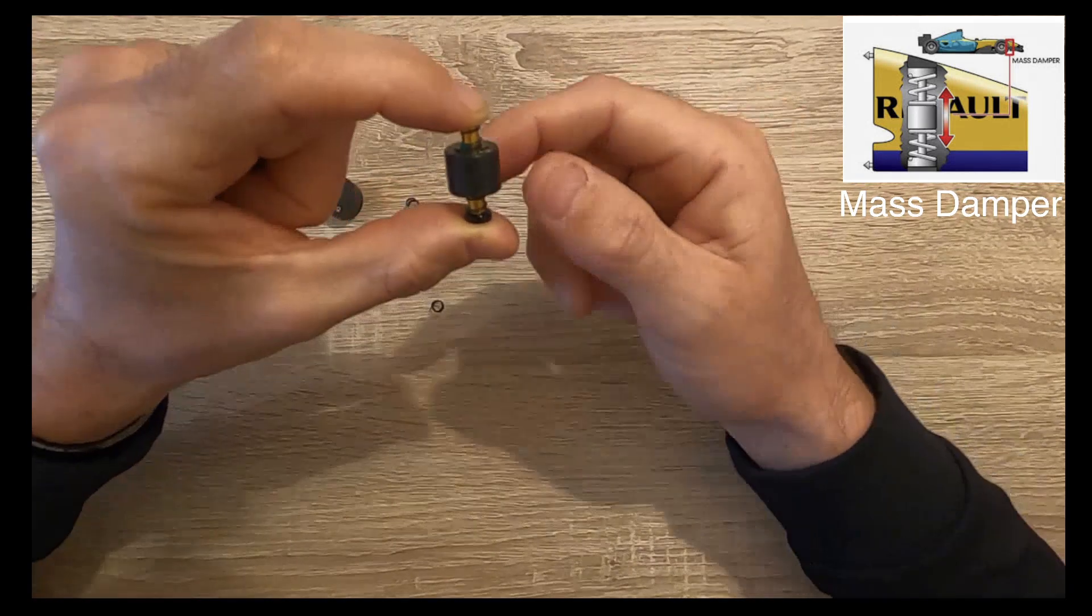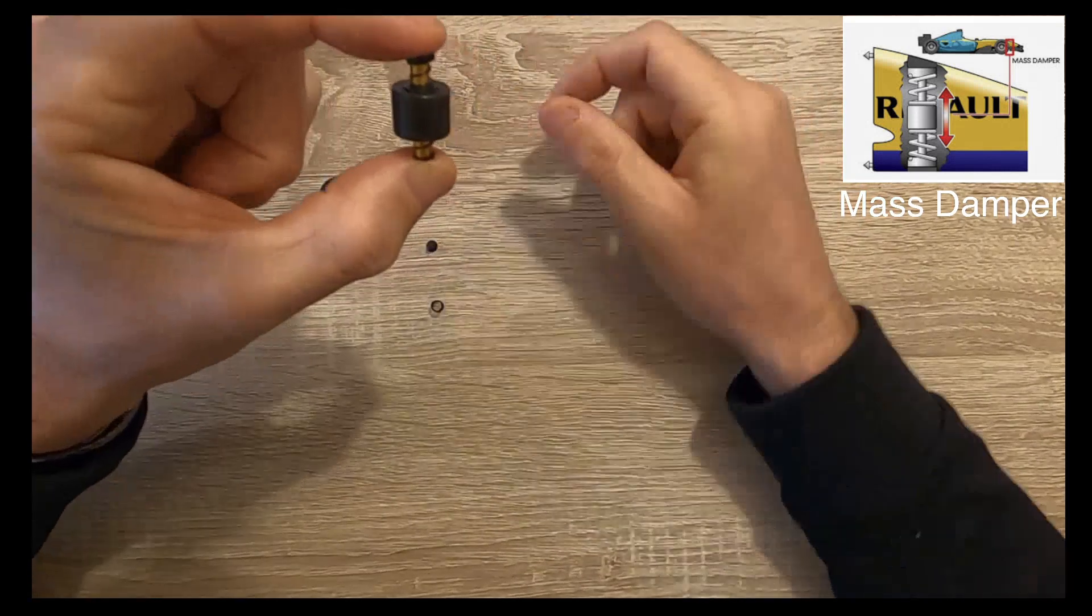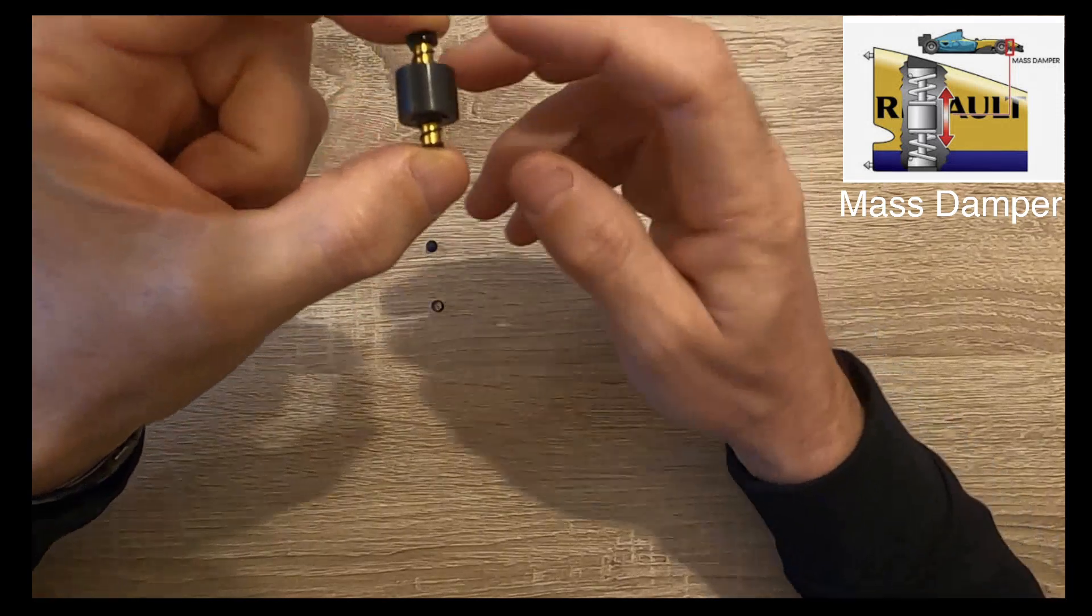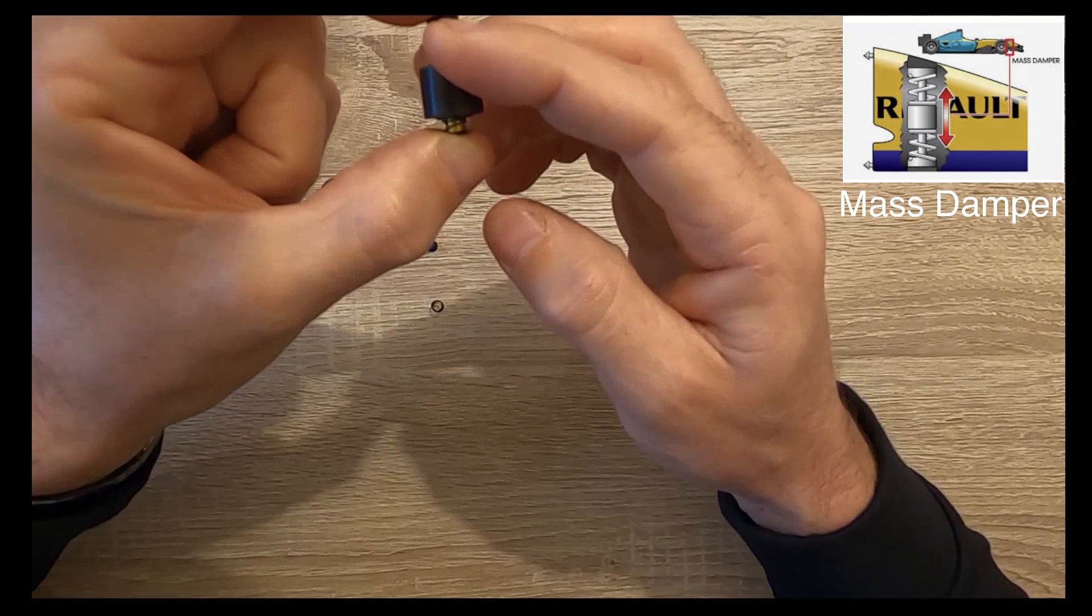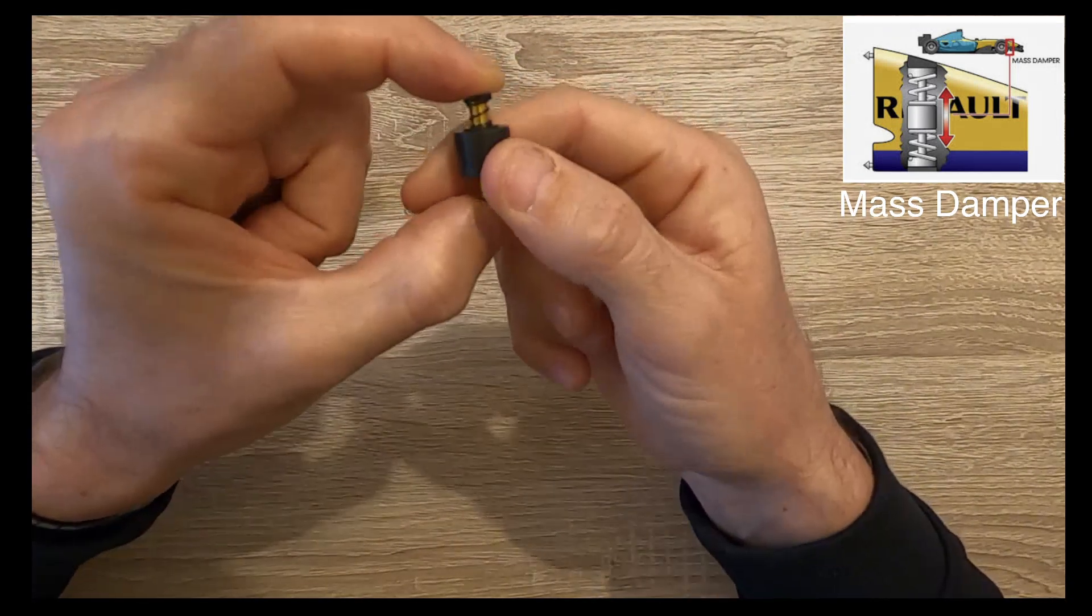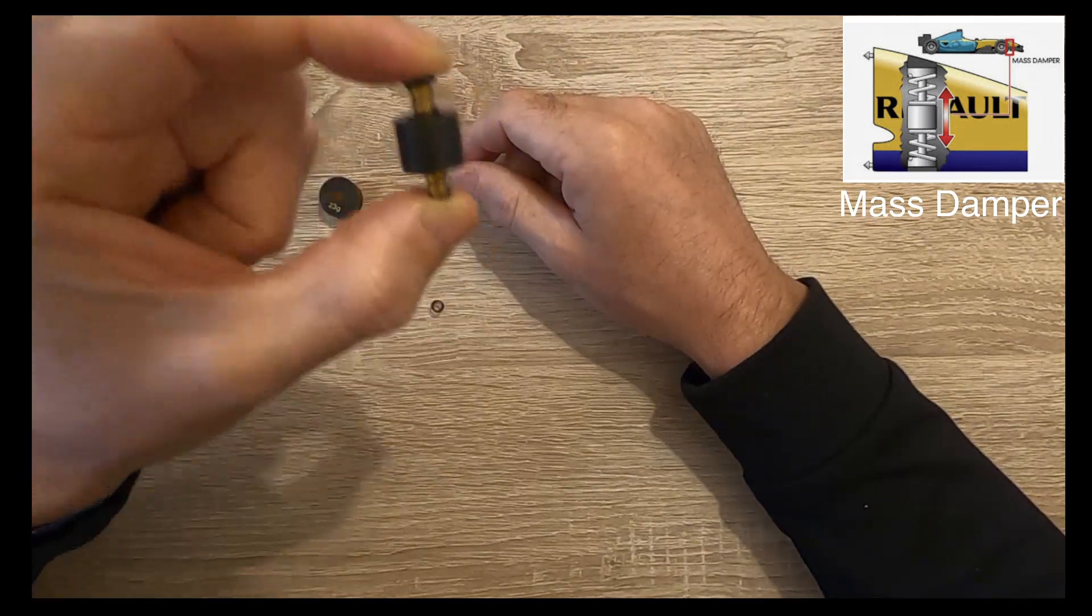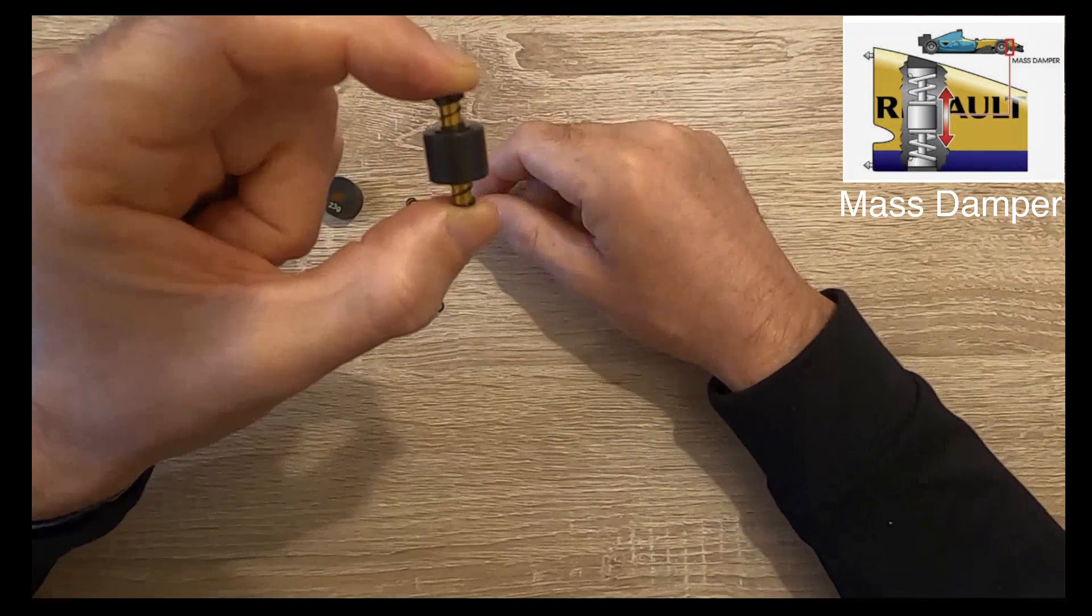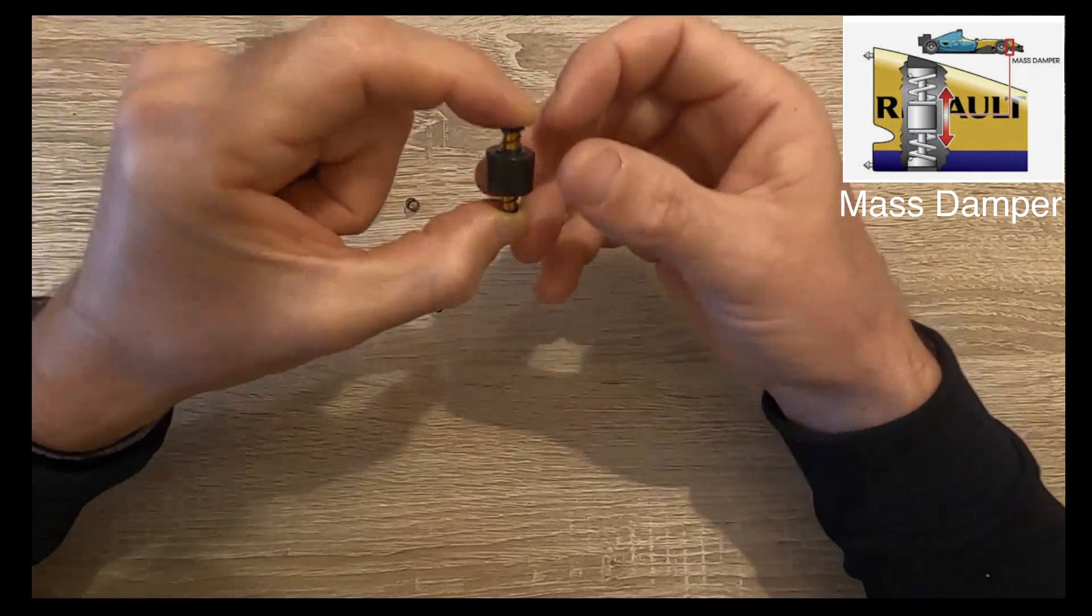Obviously as the chassis - it would be sitting on the chassis like so - as the chassis rises up, it's obviously going to be absorbed or worked against with the weight. As the chassis then drops, the weight is then going to obviously try and slow that down. So as the chassis is moving up and down, this weight is trying to slow that motion down and give you more grip and a more settled car.